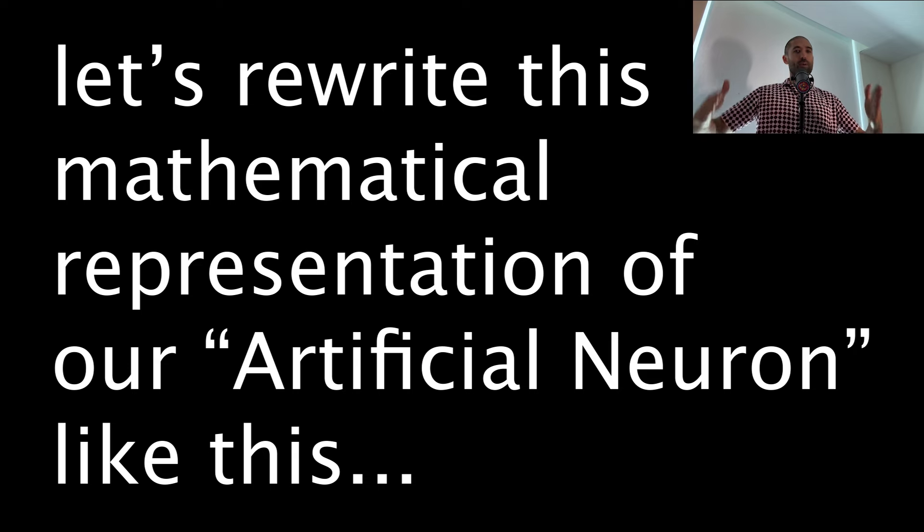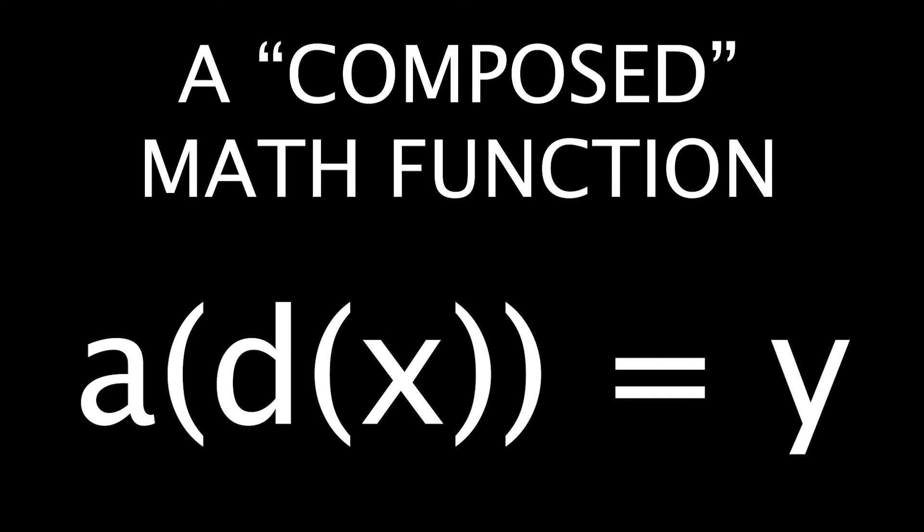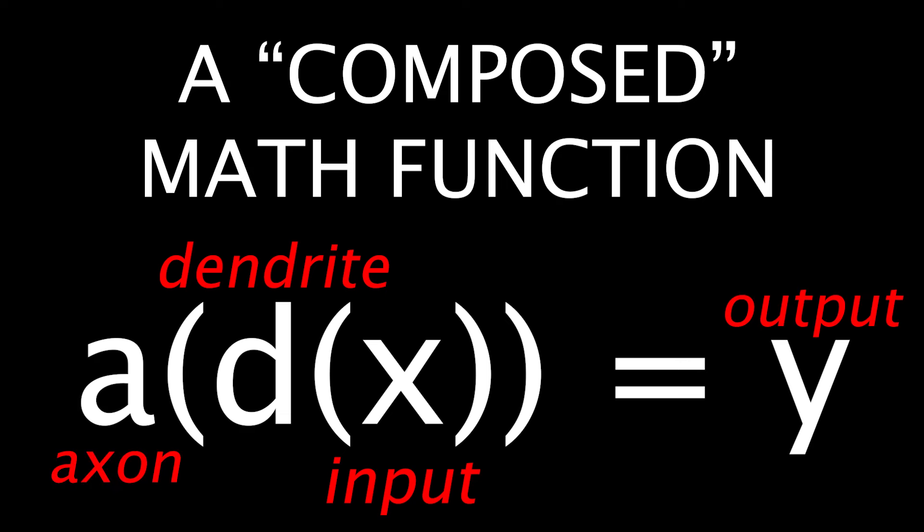Now, let's rewrite this mathematical representation of our artificial neuron like this: A of D of X equals Y. To connect these symbols back to the neuron it resembles, X represents the input or the dendrite, D represents the dendrite, A represents the axon, and Y represents the output released by the axon or neuron.